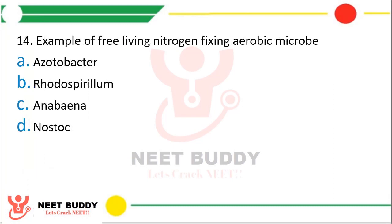Question 14: Example of free living nitrogen fixing aerobic microbe is? Option A, Azotobacter. Option B, Rhodospiralum. Option C, Anabaena. Option D, Nostoc. The correct answer is Option A — Azotobacter. And the example of a free living nitrogen fixing anaerobic organism is Rhodospiralum.